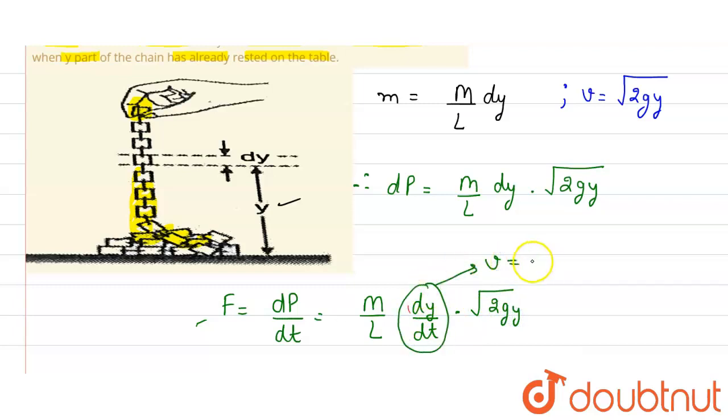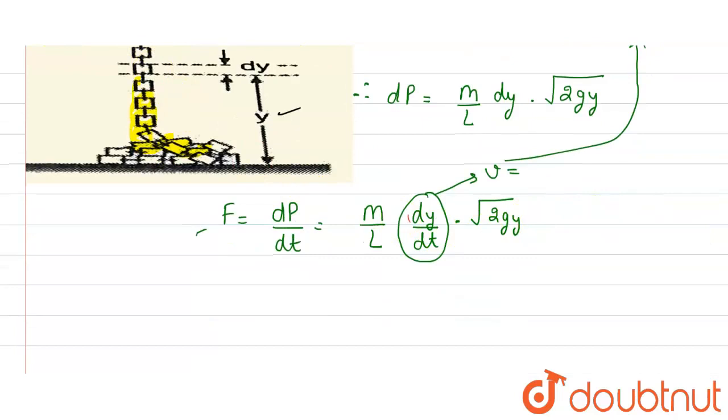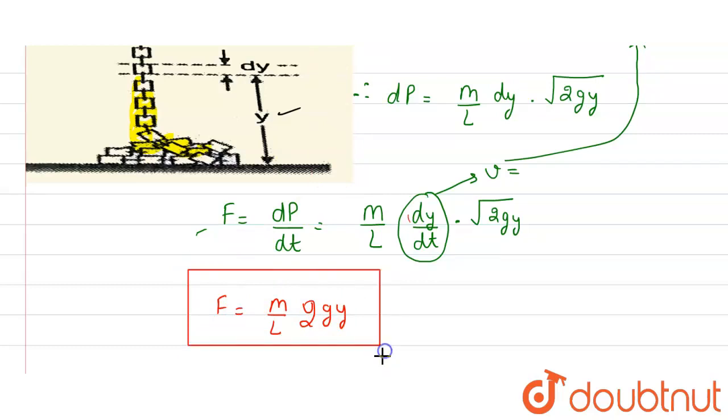This velocity equals √(2gy), so √(2gy) times √(2gy) becomes 2gy. Therefore, the force F equals (m/l) times 2gy. So the answer is F = (m/l) × 2gy.